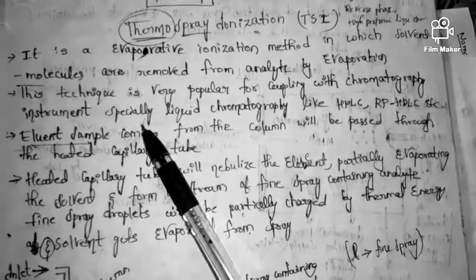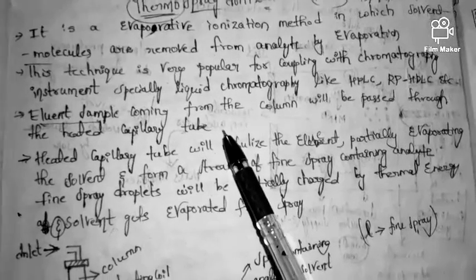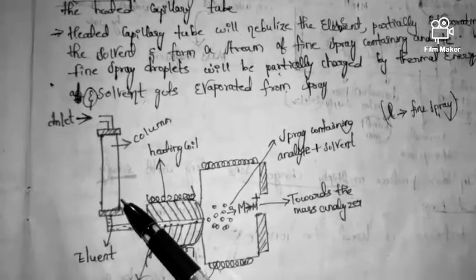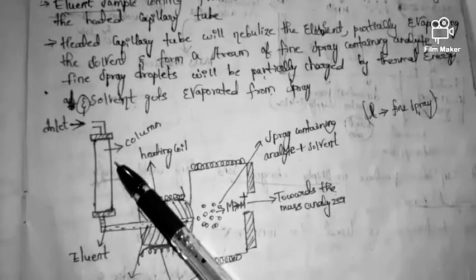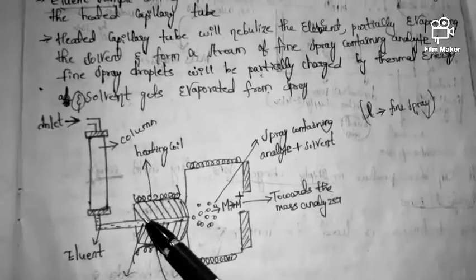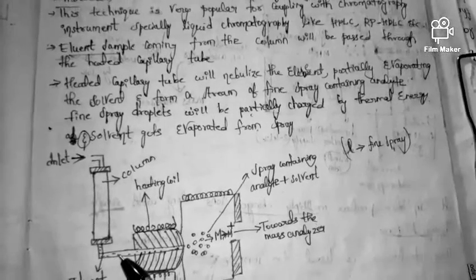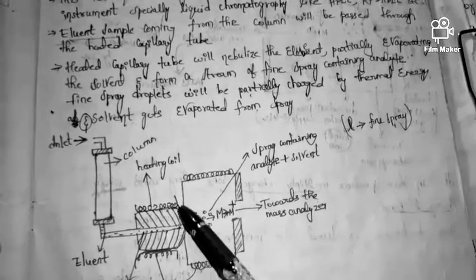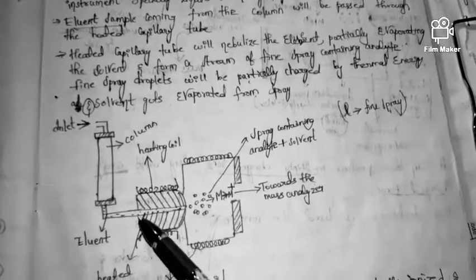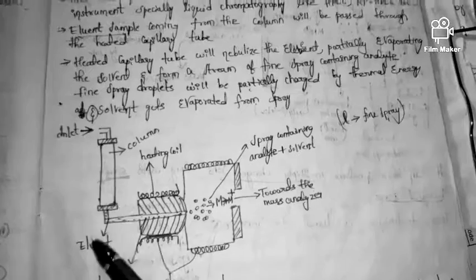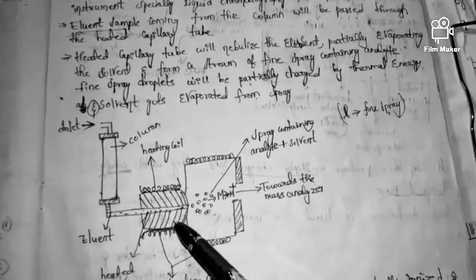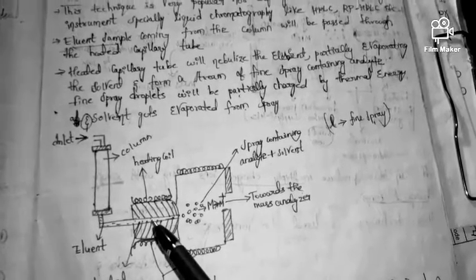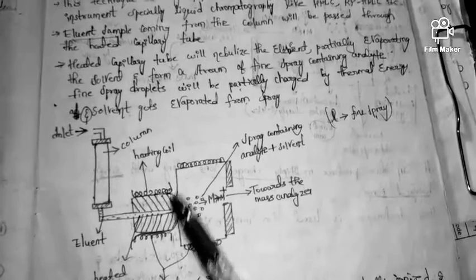The sample coming from the column — called the eluent — will be passed through a heated capillary tube. From the column, the sample is eluted and passed through this heated capillary tube, which will then nebulize the eluent.